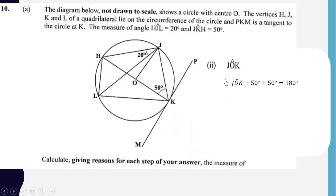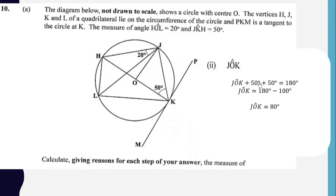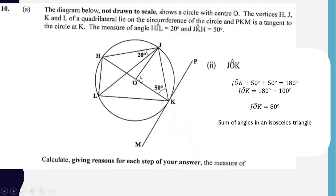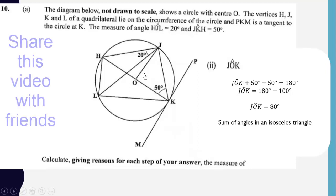We have this angle plus this angle plus this angle summing up to 180 degrees, so angle JOK equals 80 degrees. The reason is that the sum of interior angles of an isosceles triangle gives us 180 degrees.